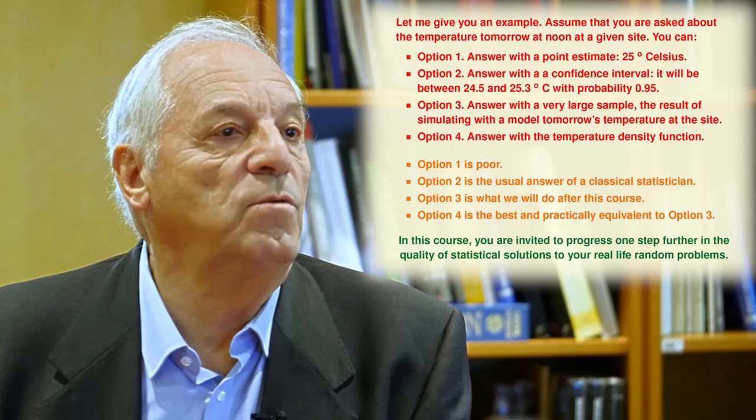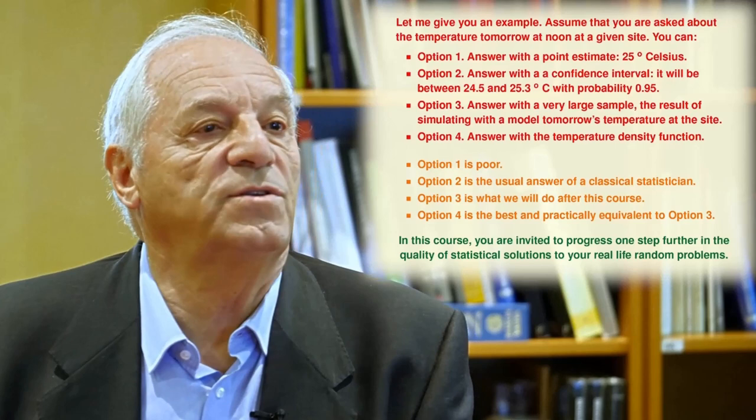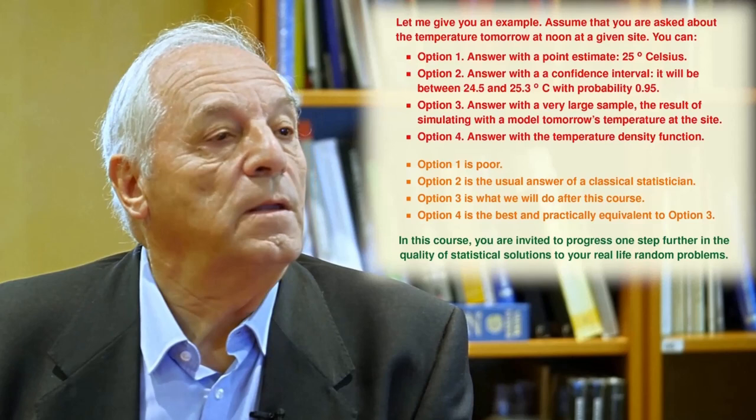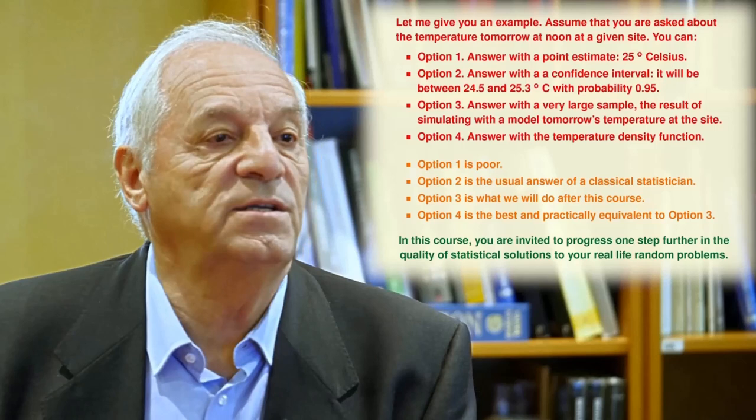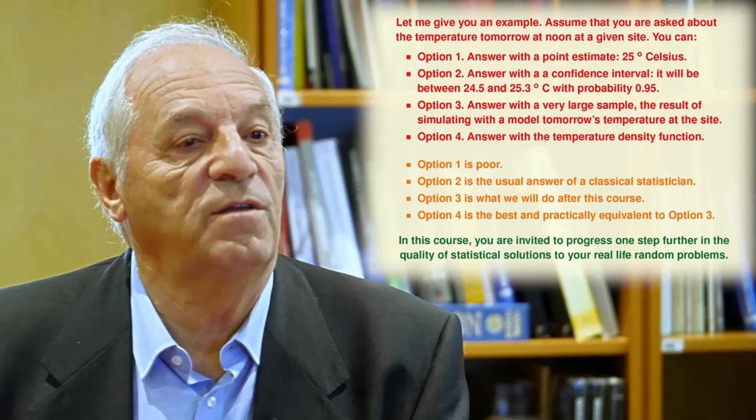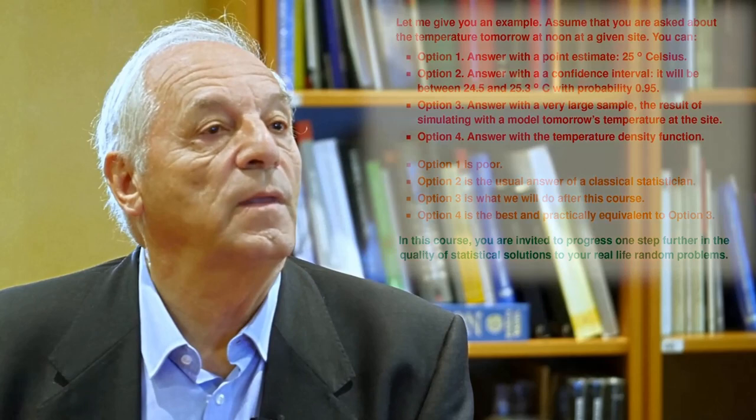Option three, answer with a very large sample — the result of simulating with a model tomorrow's temperature at the site. And option four, answer with a temperature density function. It is clear that option one is poor. Option two is the usual answer of a classical statistician. Option three is what we will do after this course. And option four is the best, but practically it is equivalent to option three. In this course, you are invited to progress one step further in the quality of statistical solutions to your real-life random problems.